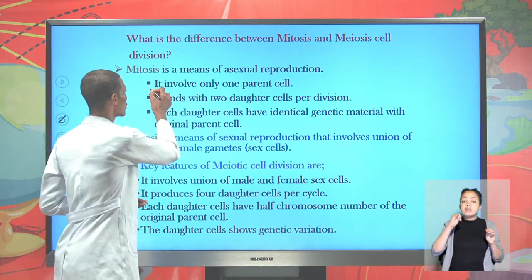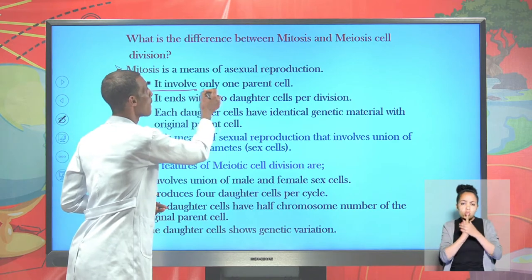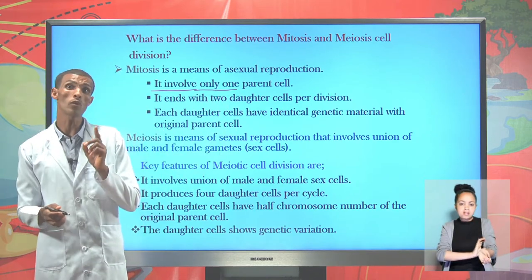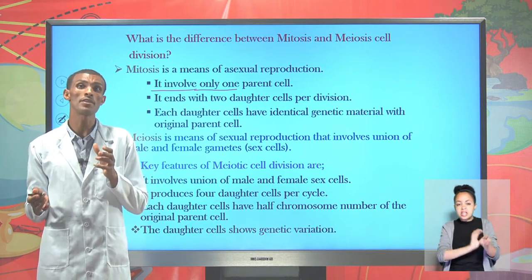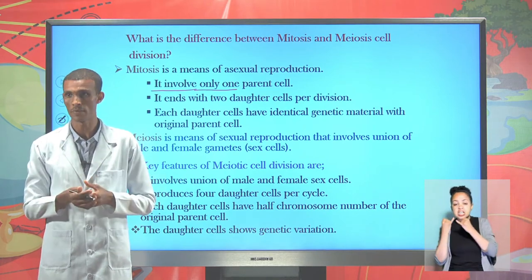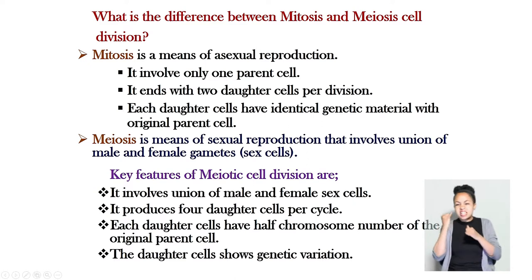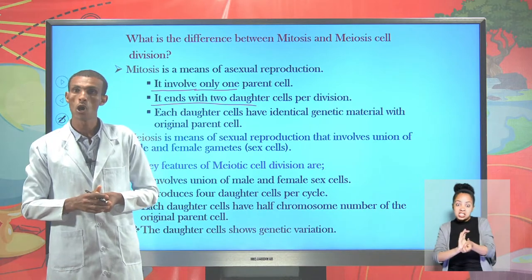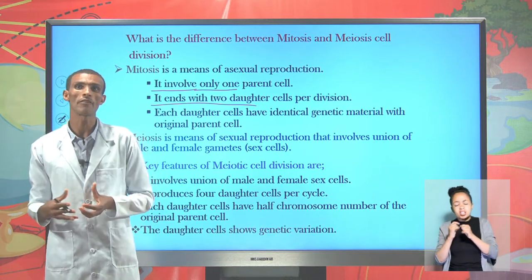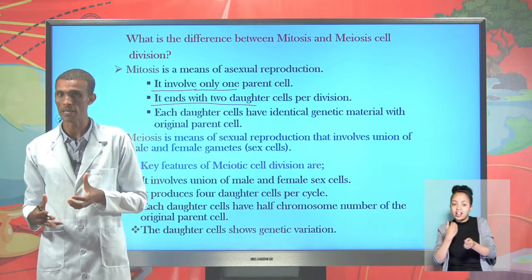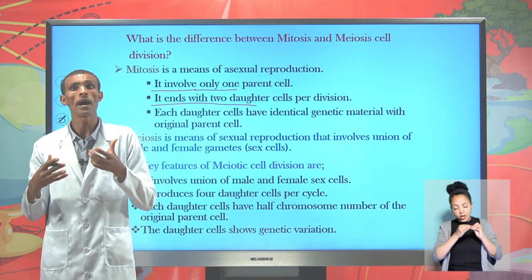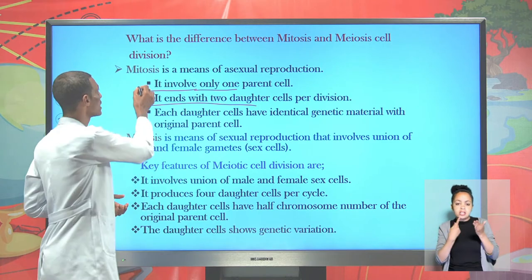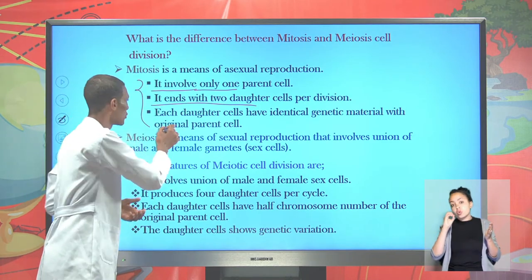Mitosis involves only one parent cell. When one parent cell is involved, the cell can divide mitotically. The end product of mitosis cell division is two daughter cells per division, where each daughter cell has identical genetic material in number to the original parent cell. This is what mitotic cell division means.